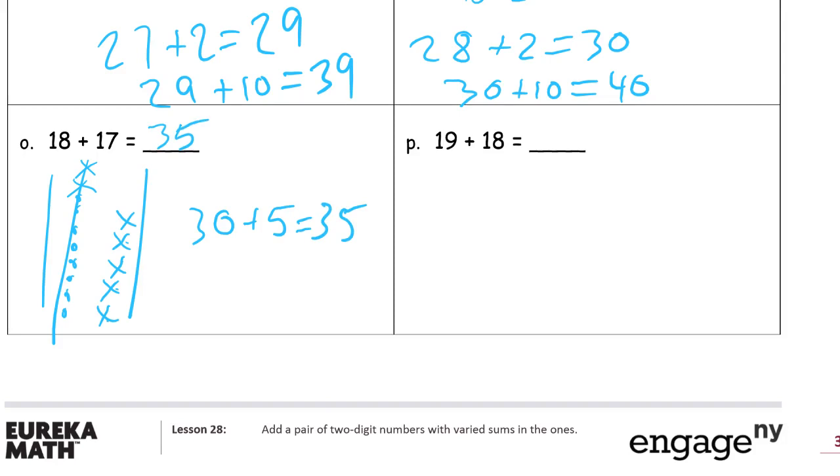And 19 plus 18. We can make this 1 and 17. 19 plus 1 equals 20, and 20 plus 17 equals 37.